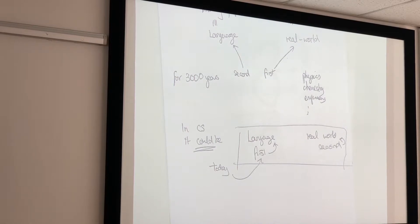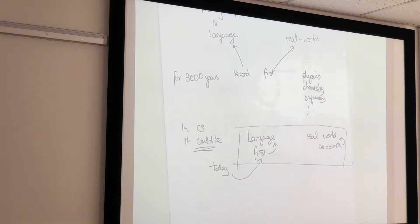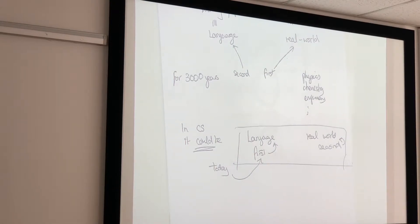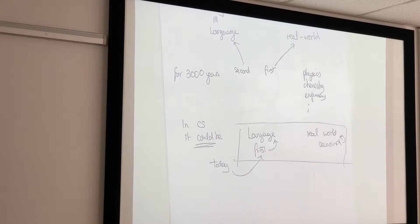I think this is fascinating, which is why I spent five minutes talking about it. It's a really fundamental question: does the world exist and we use language to talk about the world? Or do we have language, and it is our language which creates the world in front of us? If I was blind, sight is a kind of language — I couldn't see the real world, so my world would be very different. That's a very modern idea, and computer science is at the forefront of it because we study language.